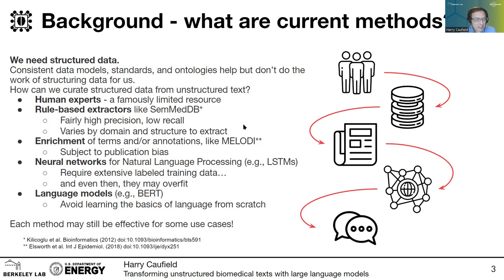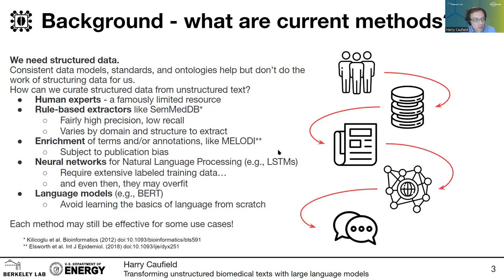Unfortunately, this can sometimes be subject to publication bias, where some things are just studied more often. If you're looking at something like TP53, that's certainly going to show up a lot more than some yet uncharacterized gene.